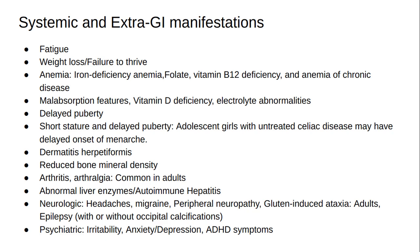Malabsorption features include vitamin D deficiency and electrolyte abnormalities. Short stature and delayed puberty may occur; adolescent girls with untreated celiac disease may have delayed onset of menarche. Dermatitis herpetiformis is a rare occurrence in childhood and is described almost exclusively in teenagers and adults. Reduced bone mineral density, arthritis (common in adults), and abnormal liver enzymes or autoimmune hepatitis are also associated.